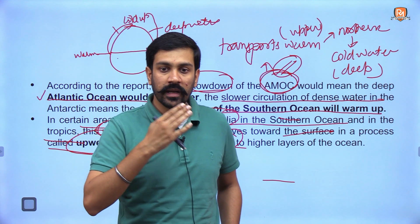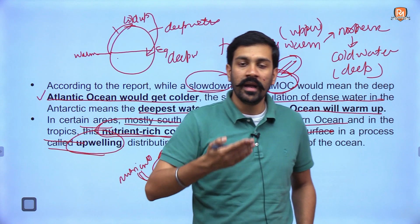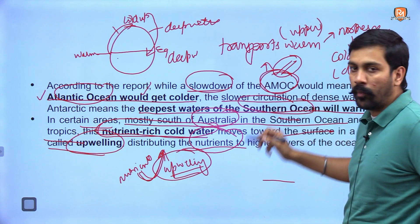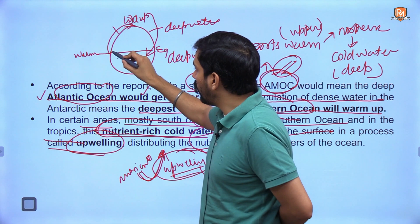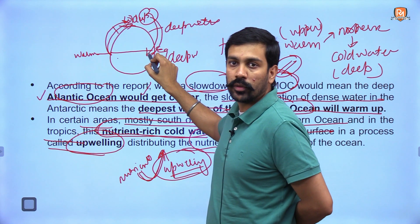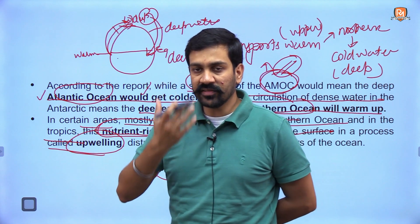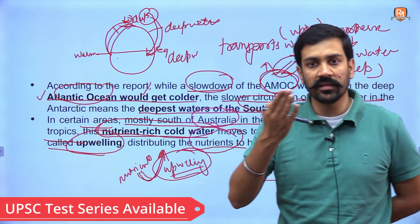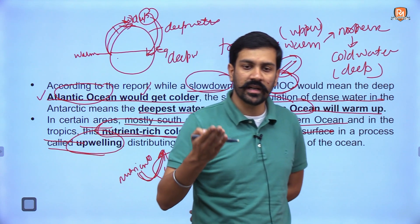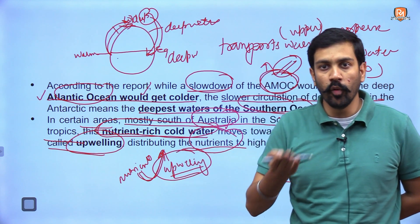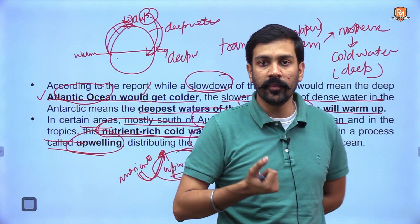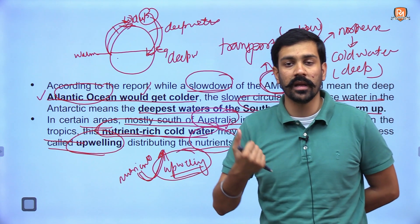In summary, the slowdown of AMOC will lead to: first, warming of southern ocean areas while northern Atlantic areas get excessively cold — because warm water will not be redistributed to polar areas and cold deep water will not circulate back to equatorial areas; second, the process of upwelling — where nutrients at the ocean floor move towards the surface — will slow down, and nutrients will not be redistributed around the globe.